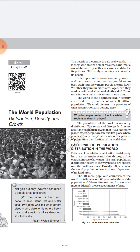The pattern of population distribution and density helps us to understand the demographic characteristics of any area. By studying this pattern and various statistics, we can analyze growth and many other factors. The term population distribution refers to the way people are spaced over the earth. A very important fact: 90 percent of the world population lives in about 10 percent of its land area.